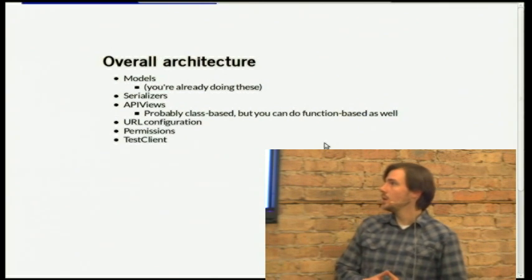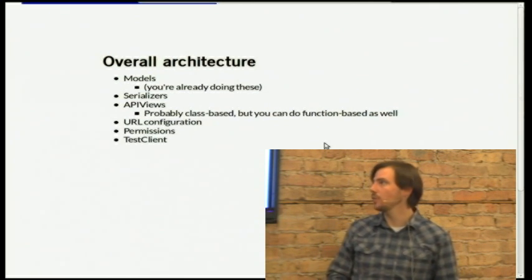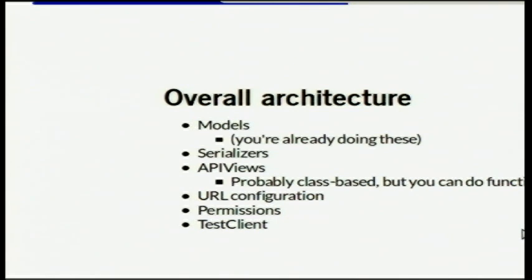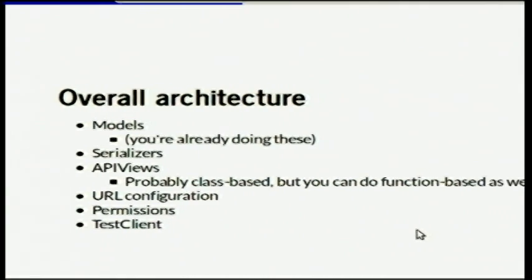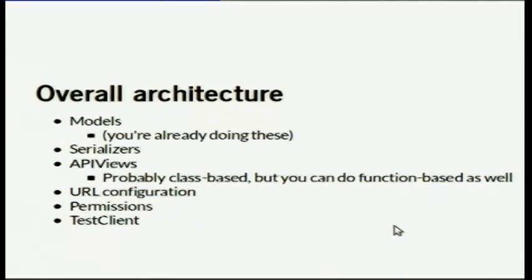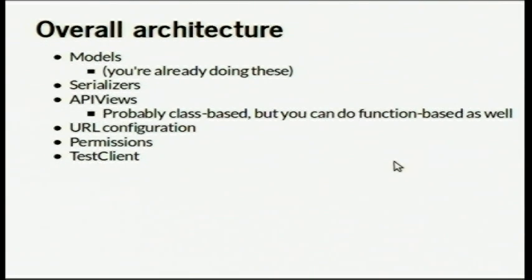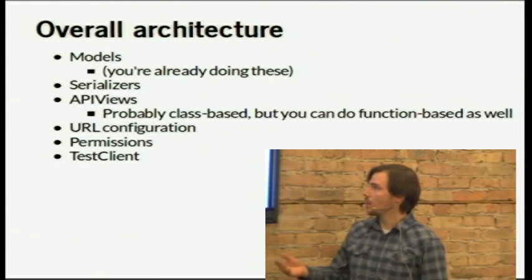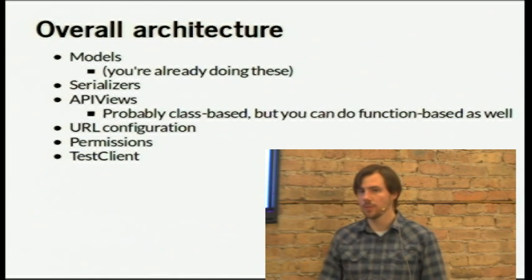Overall architecture — there's a lot of stuff included. Models, for one — you're already doing these, they're just standard Django models. Part of the architecture is serializers, which I'll talk about more. Your API views can be class-based or functions. We mostly use class-based because it makes inheritance easier, and there are a lot of cool mix-ins you can use. You also have URL configuration, permissions, and a great test client so you can hit the API in your tests as if it were a real client and check the data coming back.